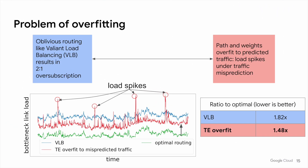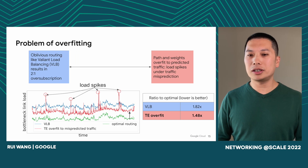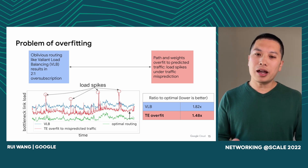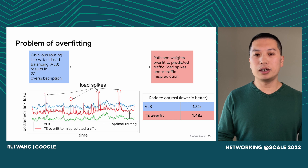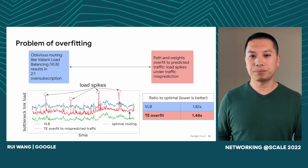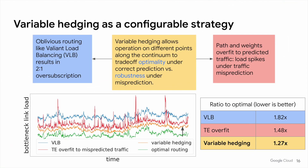Our next attempt was to reuse optimization typically adopted in wide area networks — think multi-commodity flow or progressive water-filling algorithms. But we soon found that the solution tended to be overfit to the predicted demand matrix. While data center traffic is predictable to a large extent, that prediction is rarely accurate — errors always exist. So while on average multi-commodity flow formulation works better than VLB, some links get overloaded from time to time as a result of misprediction. We realized the two schemes bookend a spectrum: on one hand, complete demand obliviousness; on the other, demand overfit.